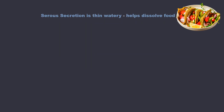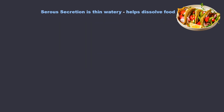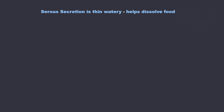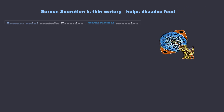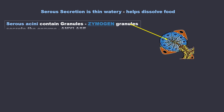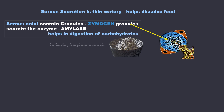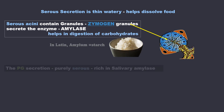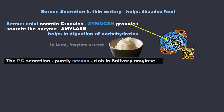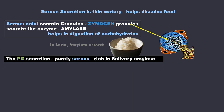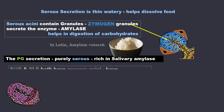Serous secretion is thin and watery, so logically it helps to dissolve food. Serous acini contain granules called zymogen granules which secrete the enzyme amylase that helps in digestion of carbohydrates. The parotid gland secretion is purely serous and very rich in salivary amylase.